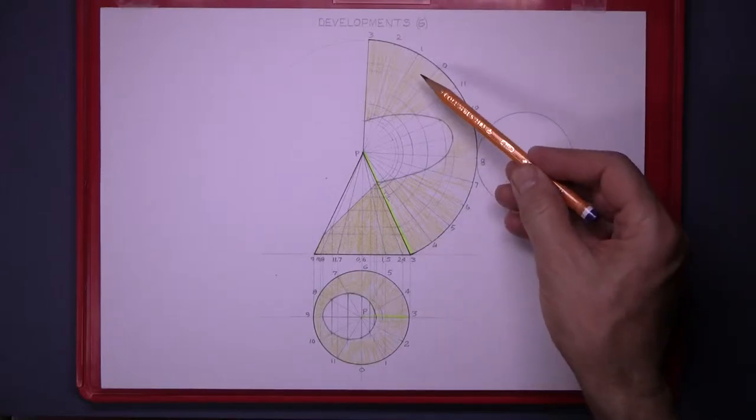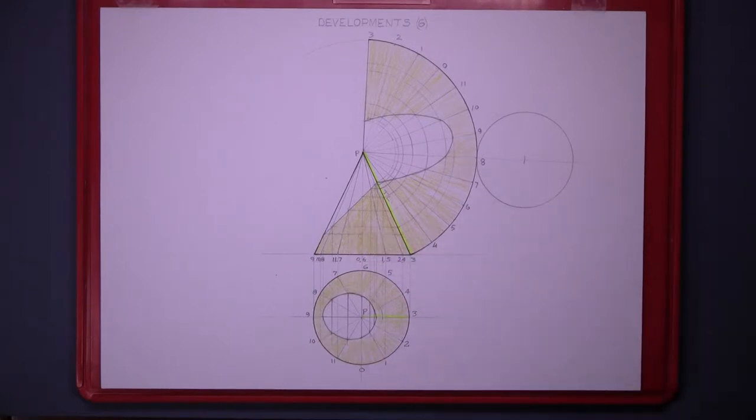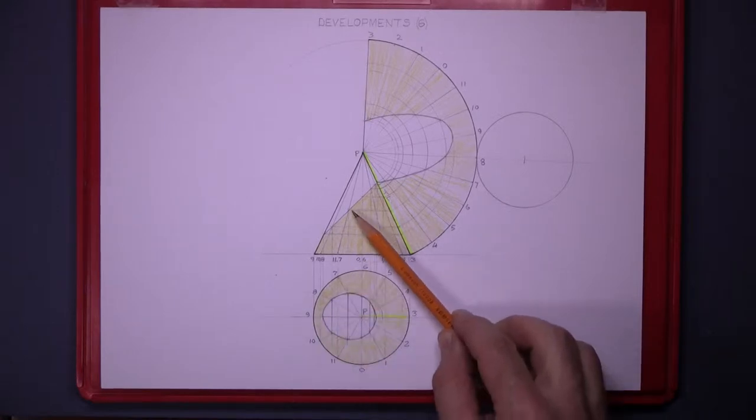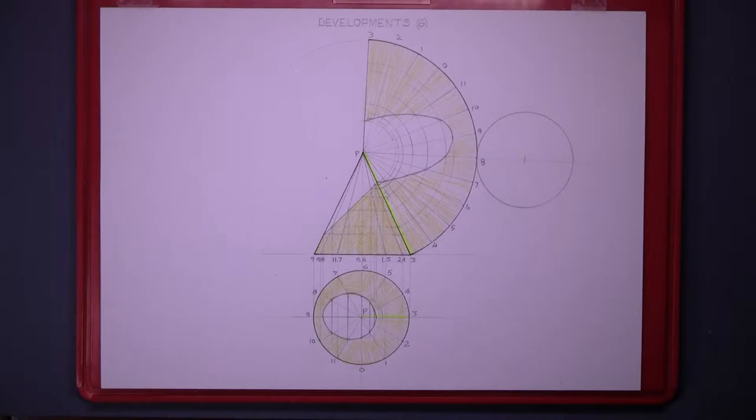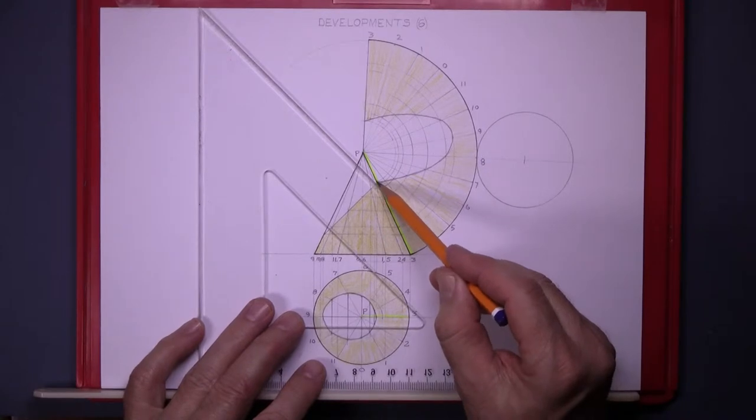And that's the development of the cut cylinder. Now to get the development of the top surface here, we draw out at 90 degrees to the cut, so project all the points out at 90 degrees to the cut.